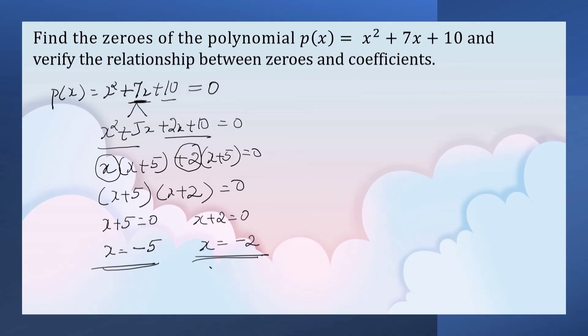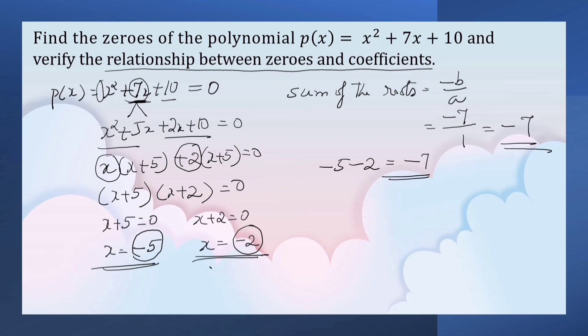Now we have to find the relationship between the zeros and the coefficient. Sum of the roots means -b/a. Here b is 7, -7/a where a is 1. So sum of the roots is -7. Here if you add the roots, -5 + (-2) = -7. So it is verified.